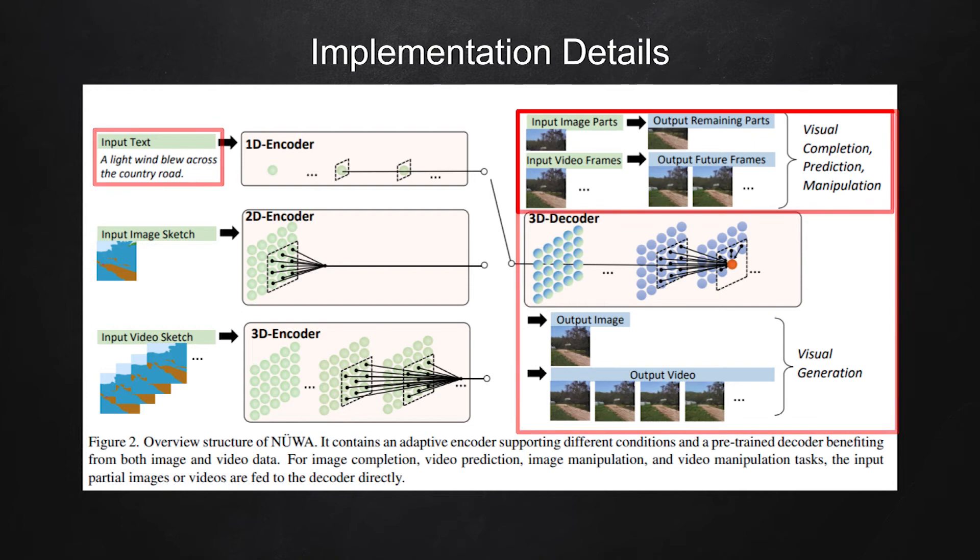For image or video manipulation tasks, the input to the decoder is embedded representation of partial images or videos. The decoder then learns to either fill in the missing region in an image or generate images or sequence of video frames depending on the task.